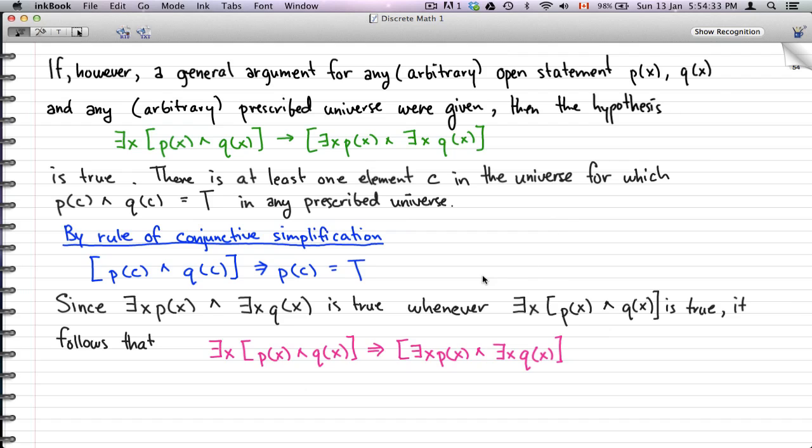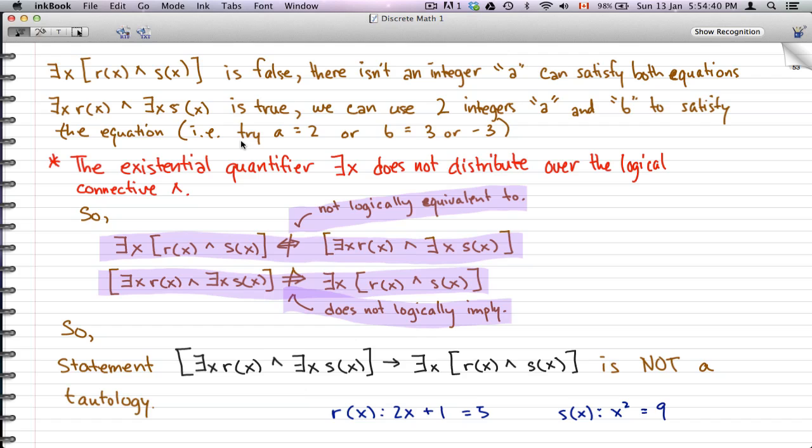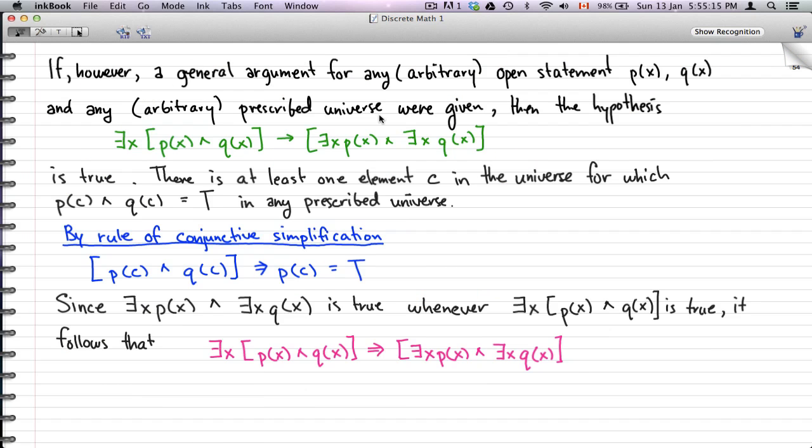That's all I wanted to go through in this video. The points to keep in this lesson is that Ex [R(x) and S(x)] is not logically equivalent to [Ex R(x) and Ex S(x)]. That is because our universe here is the integers. Really, the validity of these statements are all dependent on your universe. If our universe was different, then it might be possible. But in this case, it's not. If we used an arbitrary universe, then this logical equivalence might have worked out.